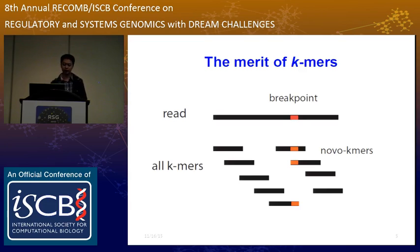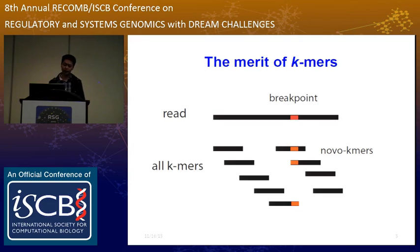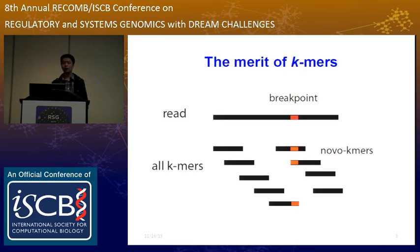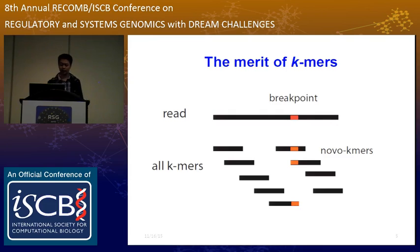So, to achieve better sensitivity and specificity, we developed NoBreak. NoBreak takes full advantage of a k-mer strategy. A k-mer is a fixed-length k substring of a sequence. We observe that a short read containing a breakpoint will have many k-mers that span that breakpoint. We call those kinds of k-mers novel k-mers. NoBreak only considers those novel k-mers and the short reads that are associated with novel k-mers.